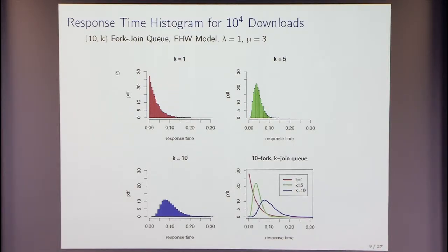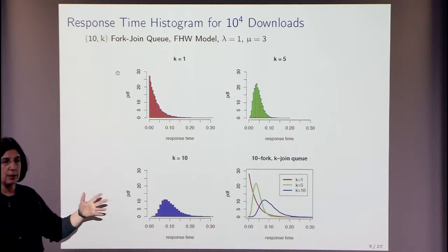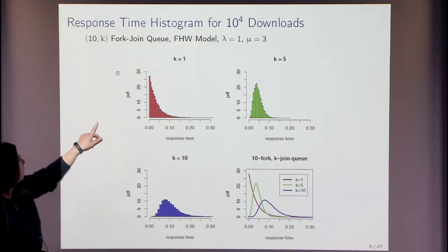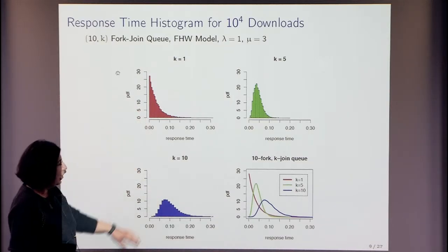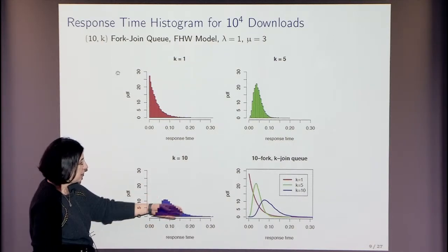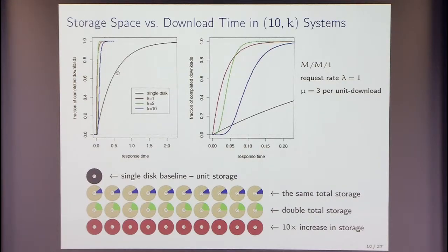Not being a queuing person, I ran simulations before students arrived for internships to see what was going on. I took a 10-K fork-join model with 10 queues. I can either completely replicate (K=1), use K=5, or K=10 — which is fork-join with no replication. It turns out these curves — histograms of PDFs of download time — somewhat cross. But if you ask what's relevant in practice — how many people can download in a given time — you're looking at CDFs.